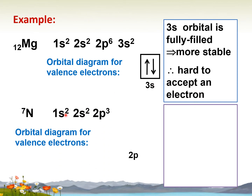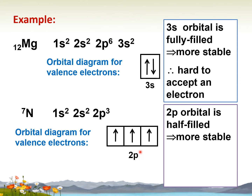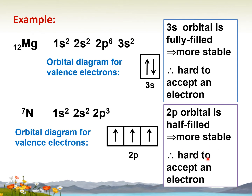For nitrogen, the configuration is 1s², 2s², 2p³. Focusing on 2p³, the three electrons are singly arranged, meaning the 2p orbital is a half-filled orbital, making it more stable. So it is also hard to accept an electron.